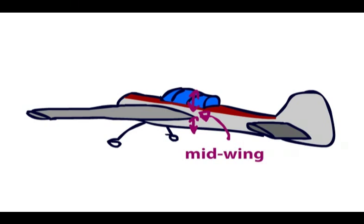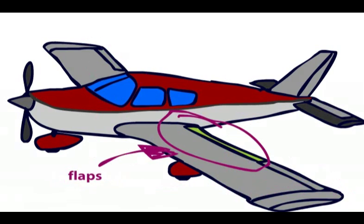In both cases, the structure of the wings are fundamentally the same in that they have wing roots, wing tips, ailerons and flaps etc.